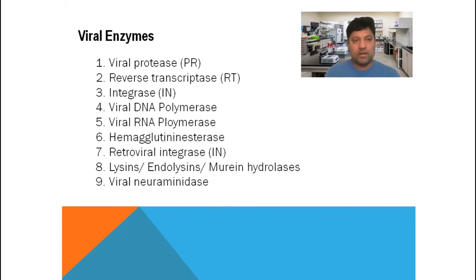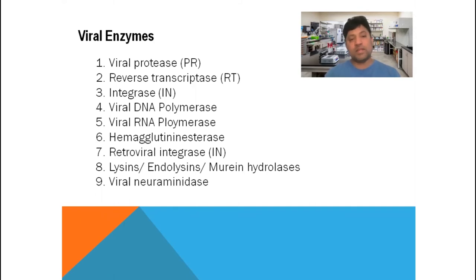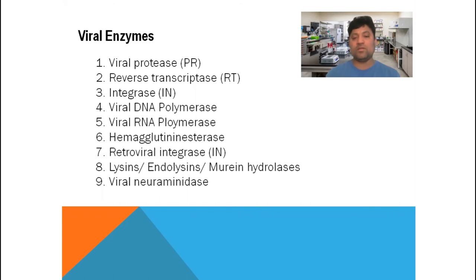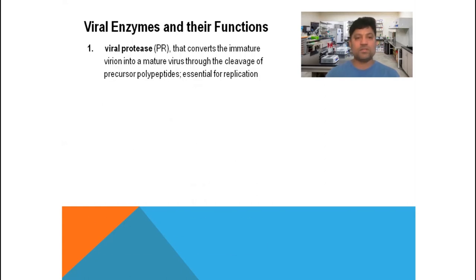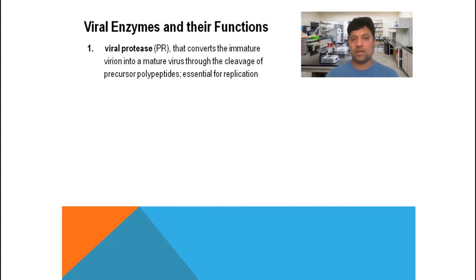There are nine different kinds of viral enzymes selected for this discussion. These are: viral protease, reverse transcriptase, integrase, viral DNA polymerase, viral RNA polymerase, hemagglutinin esterase, then lysins — endolysins and murine hydrolase — retroviral integrase, and viral neuraminidase. These nine enzymes perform different roles in the viral life cycle and will be discussed one by one.